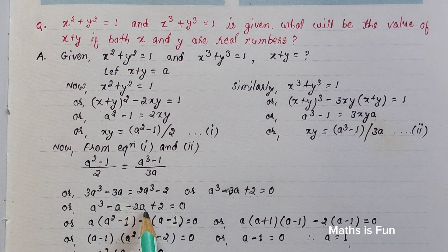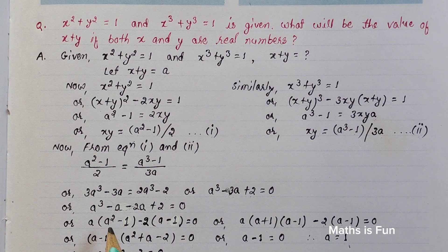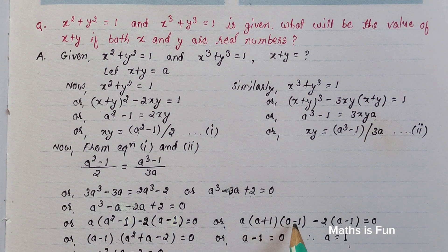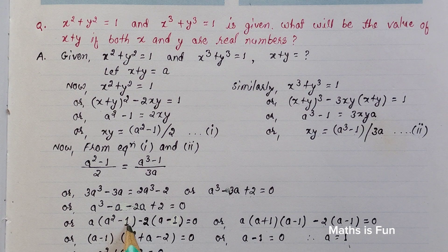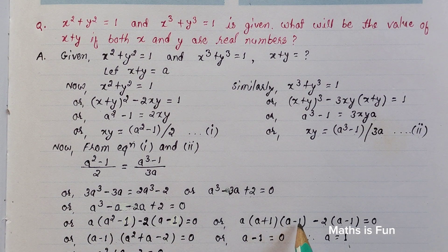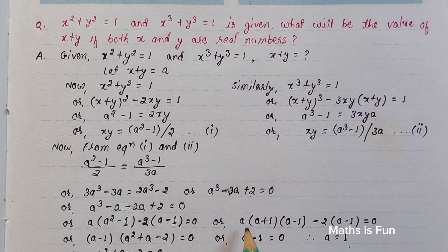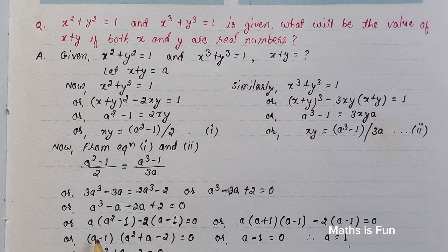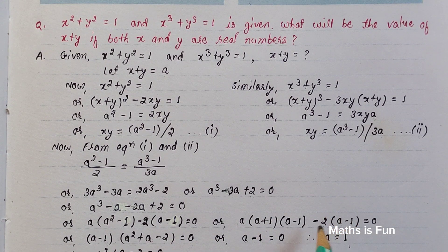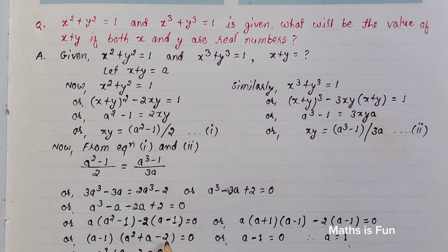Taking a as common from the first two terms gives a(a² - 1). Taking -2 common from the last two terms, -2a + 2 = -2(a - 1). We can expand a² - 1 as (a + 1)(a - 1), since a² - b² = (a + b)(a - b). Now we can take (a - 1) as a common factor from both parts.